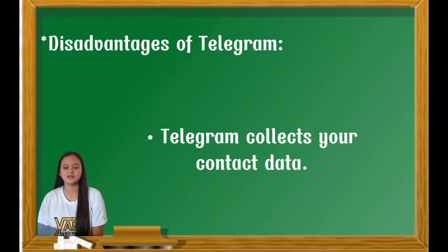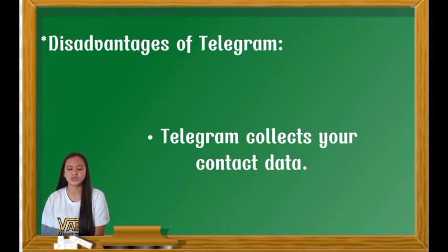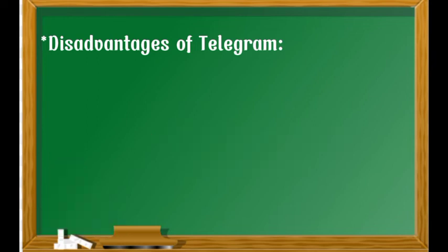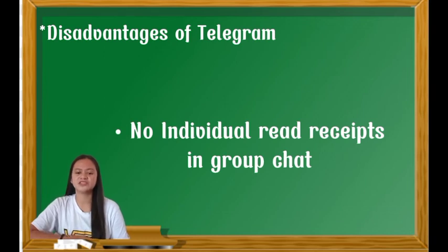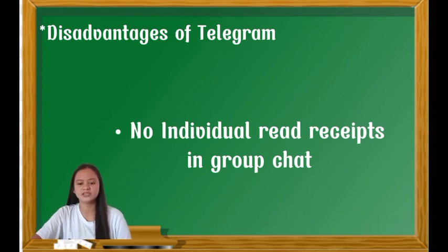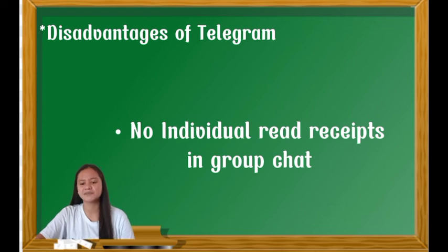Telegram collects your contact data. Telegram collects basic data about the contacts in your phone. While Telegram only stores the first and last name and the phone number for your contacts, this is still a bit concerning for an app focused on privacy. Also, getting a notification every time a friend joins the app is a pain, especially if you have most other notifications turned off. Third, there are no individual read receipts in group chats. While Telegram group chats do include read receipts, they don't keep track of each person who has read your message.